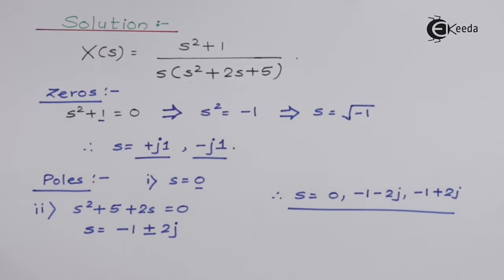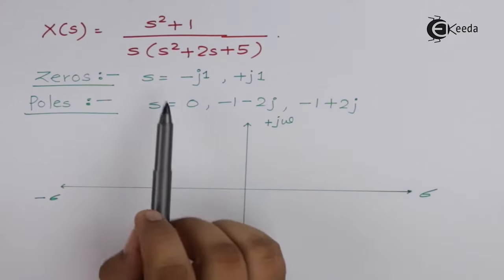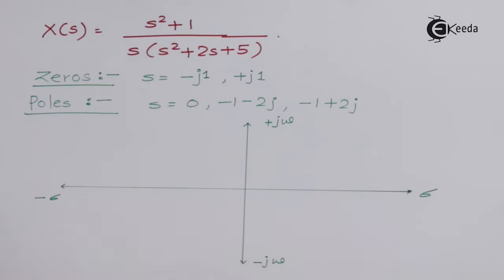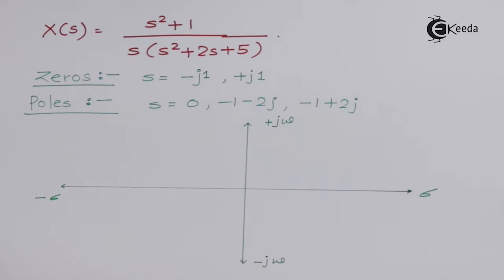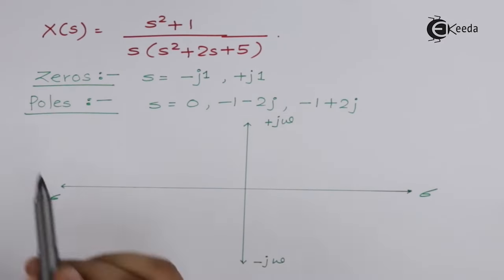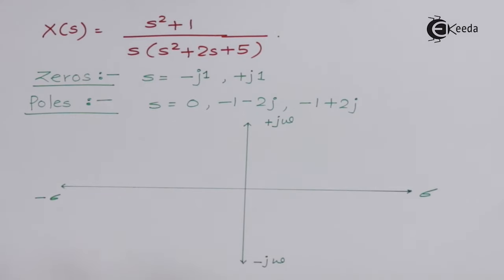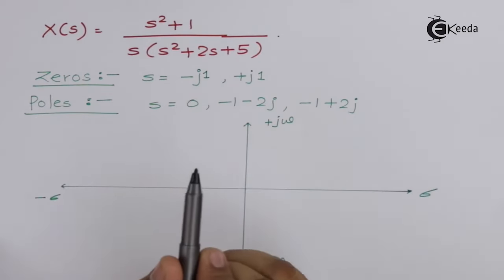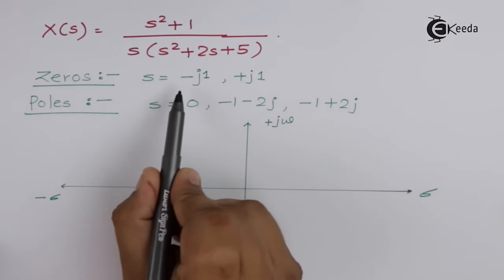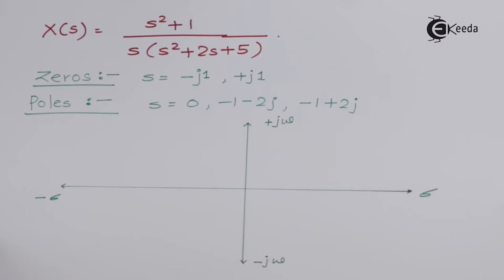Now we will plot the pole-zero diagram. We have two zeros and three poles for this function. In the Laplace domain, we mark real values on the x-axis represented by sigma, and imaginary values on the y-axis represented by jω. We will place the pole and zero values on this s-plane, also called the Laplace plane. Zeros are always marked using a circle.